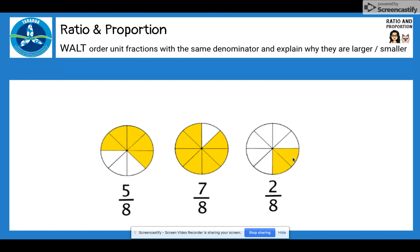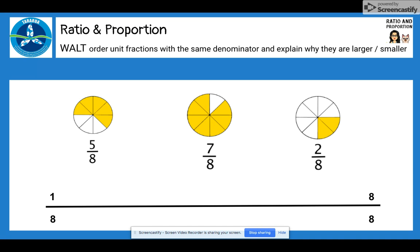Now do you think you could sort those in order of largest to smallest using a number line? We can see the start of our number line is 1 over 8 or 1 8th and the end of the number line is 8 over 8 or 8 8th or the equivalent to one whole number. Whereabouts might you place those fractions on that number line? This might be a good place to pause the video and have a chat to your buddy.